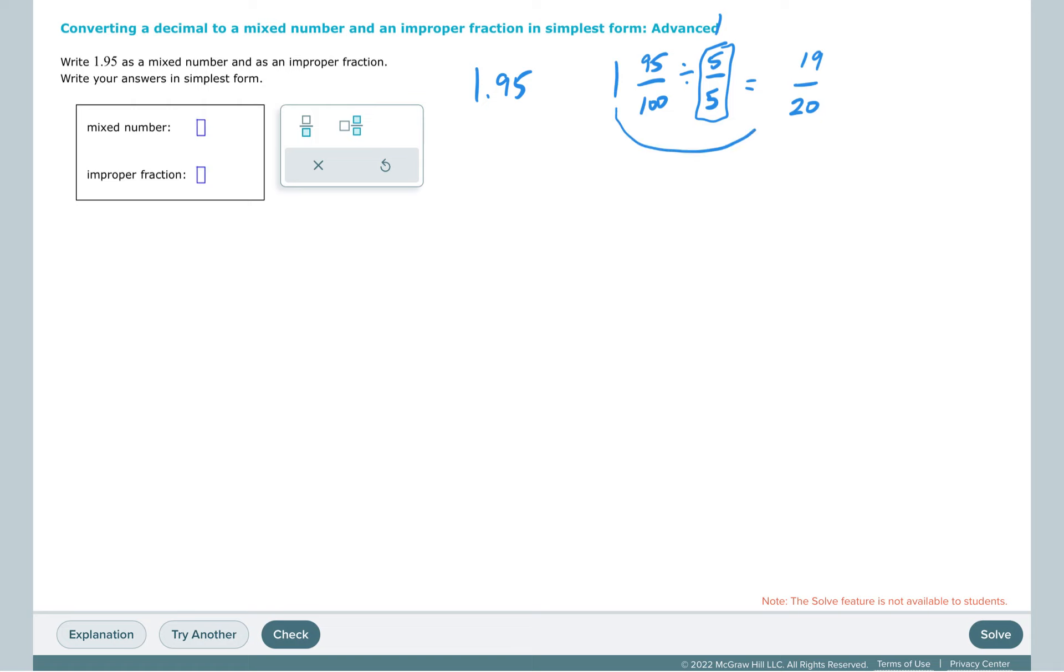Now we're going to move our whole number back in front of our new fraction. So our mixed number is 1 and 19/20ths.